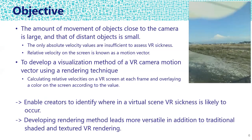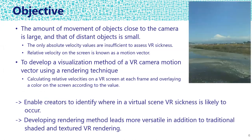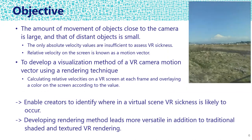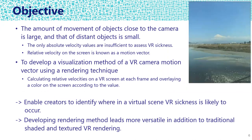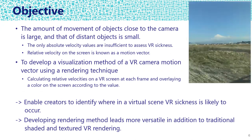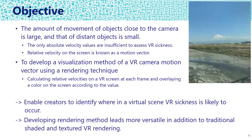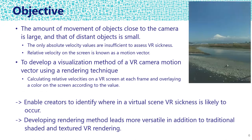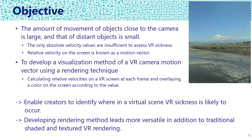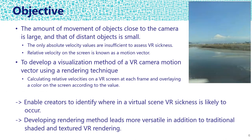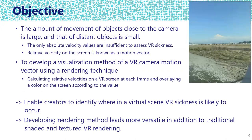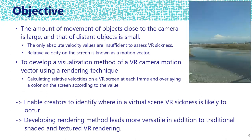We developed the rendering method for absolute velocity of the virtual camera using a customized segmentation rendering. The amount of movement of objects close to the camera is large, and that of distant objects is small, as the video shows. Then, absolute velocity alone is insufficient to assess VR sickness. Relative velocity on the screen is known as a motion vector. The objective of this research is to develop a visualization method of a virtual camera motion vector using a rendering technique, enabling creators to assess whether VR sickness is likely to occur in a virtual scene.